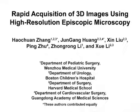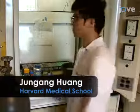The overall goal of this protocol is to rapidly acquire high-resolution 3D digital images of biological specimens using standard laboratory equipment. This method can answer key questions in the field of developmental biology through the visualization and analysis of complex morphological features. The main advantages of this technique are that it uses standard lab equipment and requires minimum prior experience. Demonstrating the procedure will be Jun-Gang Huang, a graduate student from my lab.